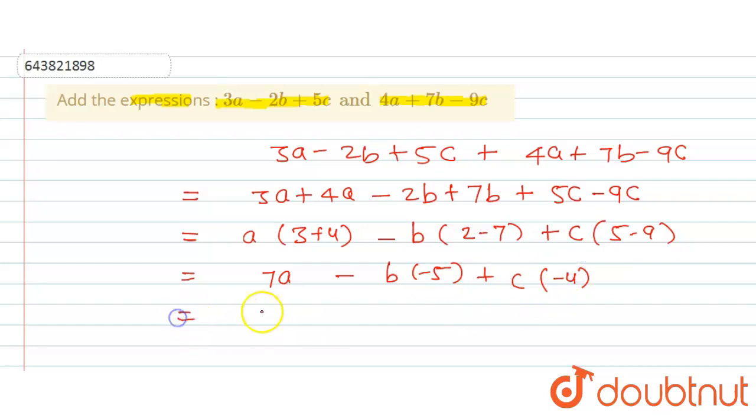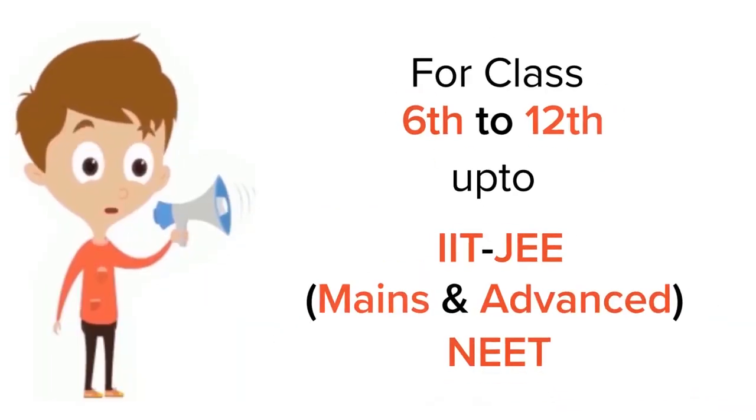minus 4. Further we will simplify, so 7a, and multiply minus with minus - that is plus - so 5b. And here, plus minus multiply - plus and minus, so this is going to be minus. So minus times 4c. This is the addition of this expression.